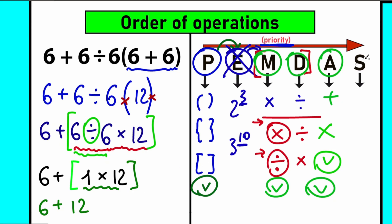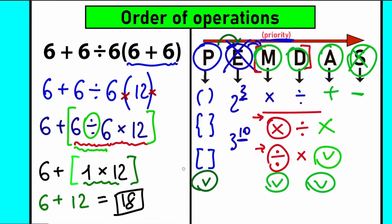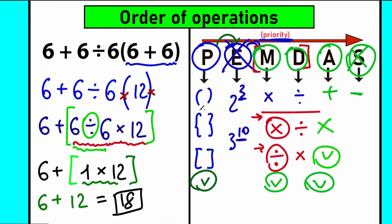In conclusion, the final step: A stands for addition. We don't have subtraction, so we can skip S. We have 6 plus 12 equals 18. This is the correct answer. A lot of students ask why this is correct — because PEMDAS is the basic order of operations. I'm not talking about implicit multiplication. This basic order of operations means we solved this absolutely correctly. This is the most popular order of operations, and 18 is the correct answer.